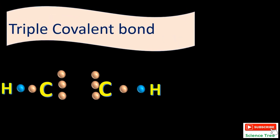Triple covalent bond: carbon can form single, double, and triple covalent bonds. Carbon has four electrons in its outermost shell. In a triple covalent bond, carbon shares three of its electrons with another carbon atom, forming a triple covalent bond between the two carbon atoms. The one remaining electron in each carbon forms a bond with hydrogen, giving the compound ethyne.